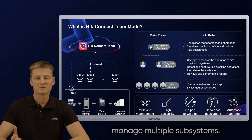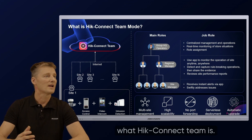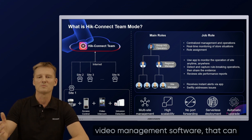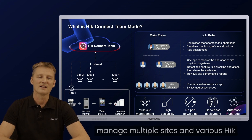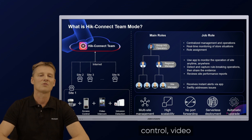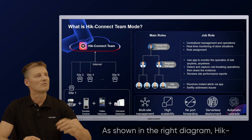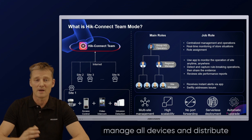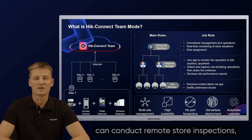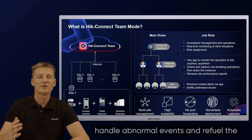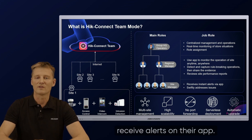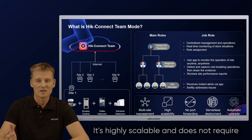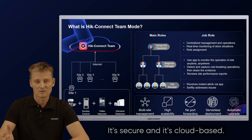HiConnect team is designed to manage multiple subsystems. It is a cloud-based VMS — video management software — that can manage multiple sites and various Hikvision products including CCTV, access control, video intercom and alarm devices. HiConnect team allows for role-based management with different permissions. For instance, HQ operators can centrally manage all devices and distribute permissions, while regional managers can conduct remote store inspections, handle abnormal events and review performance of different sites. Site managers can promptly receive alerts on their app. In summary, HiConnect team is a VMS that supports multi-site management. It's highly scalable, does not require hardware or local servers, and is secure and cloud-based.